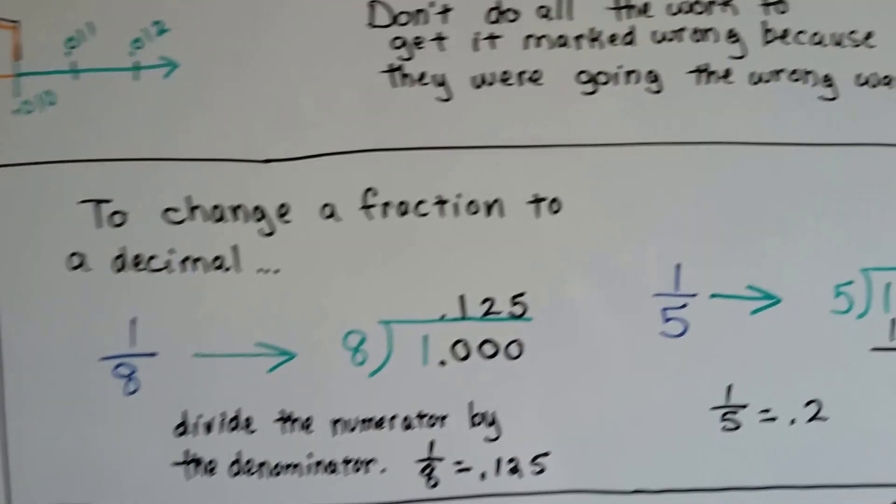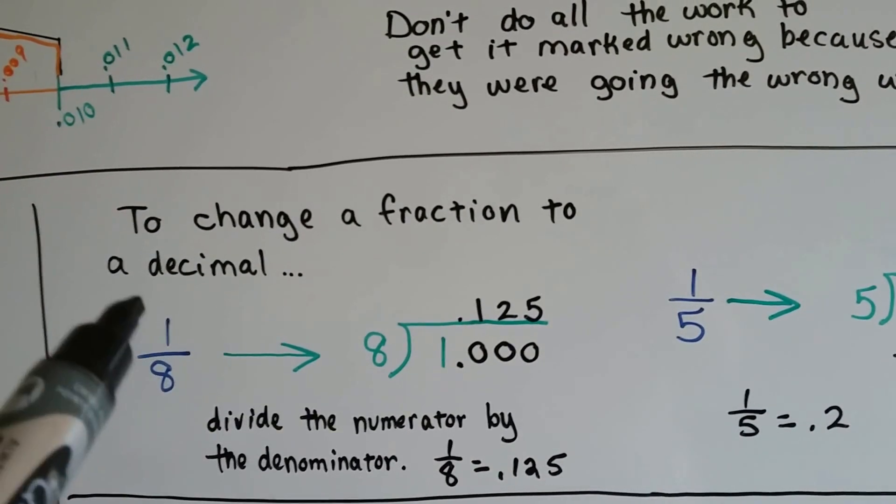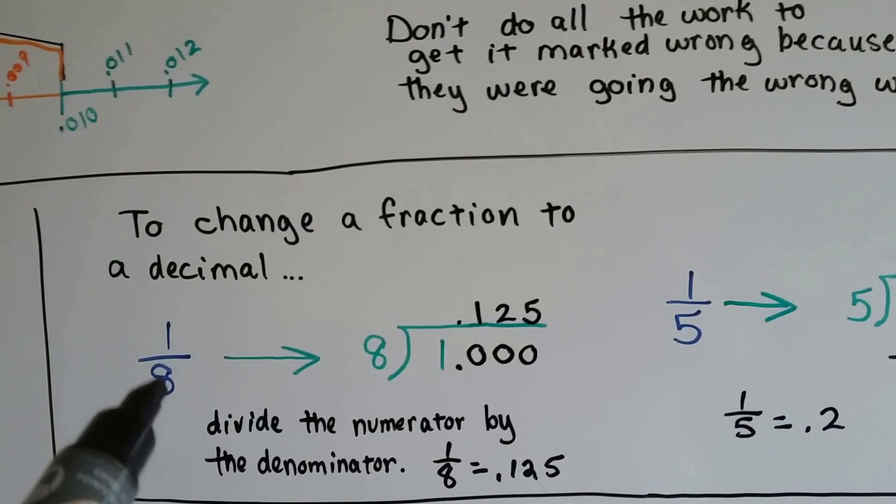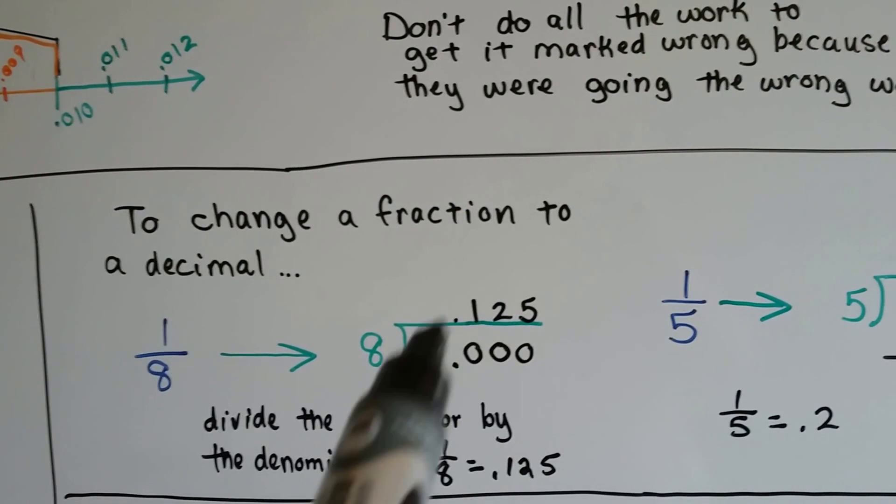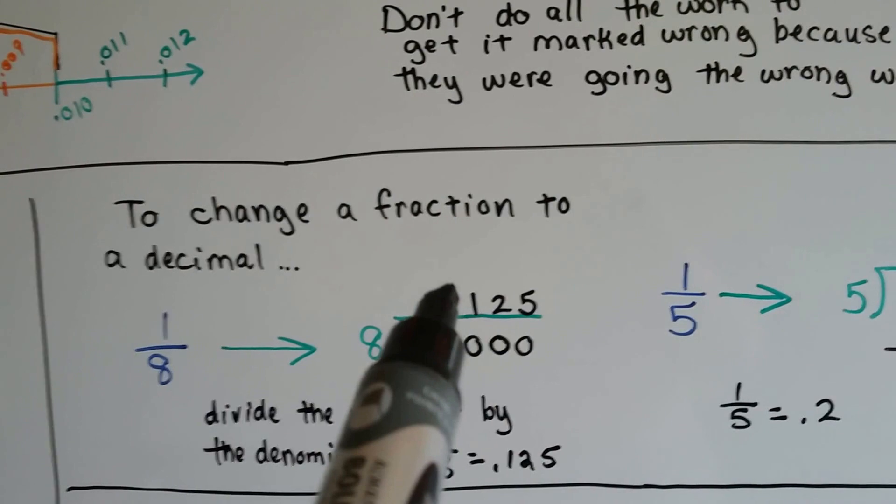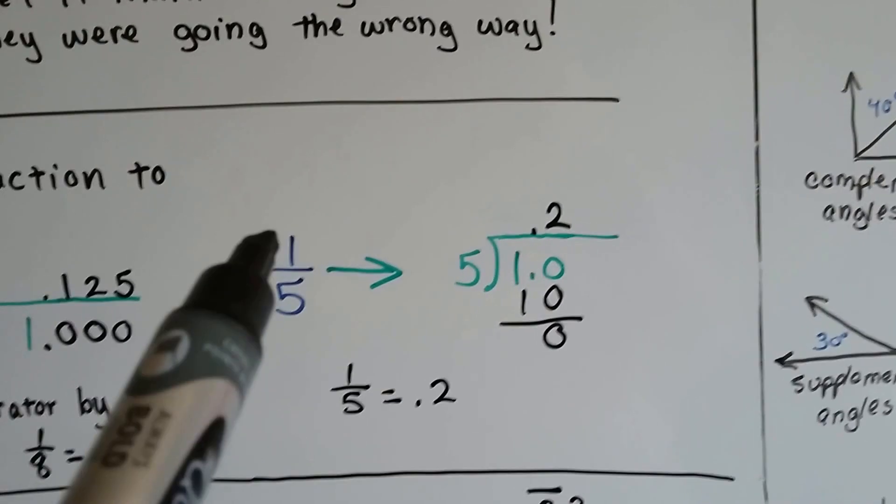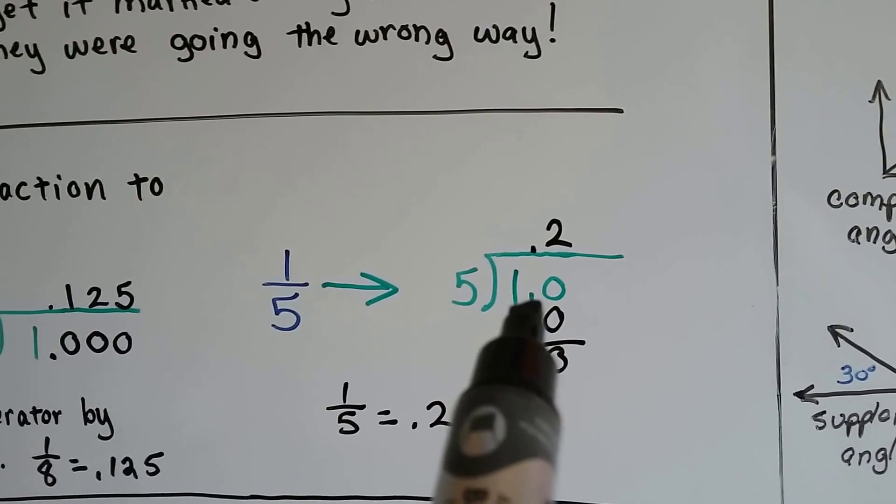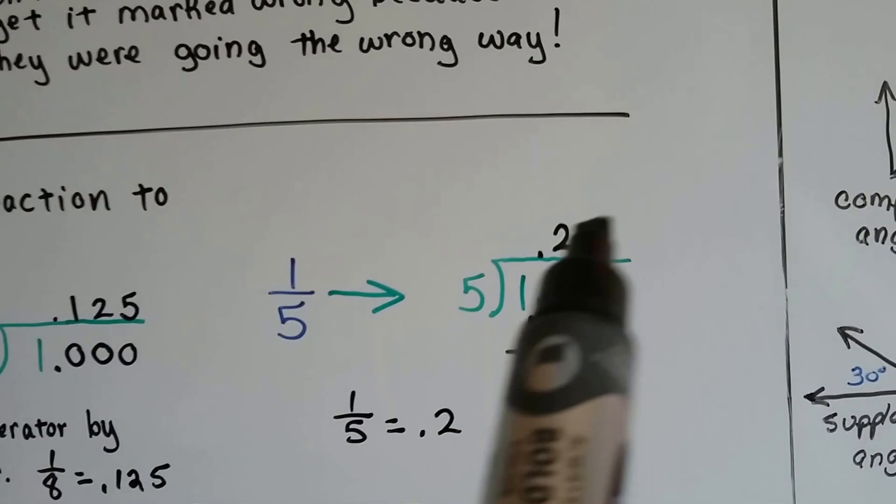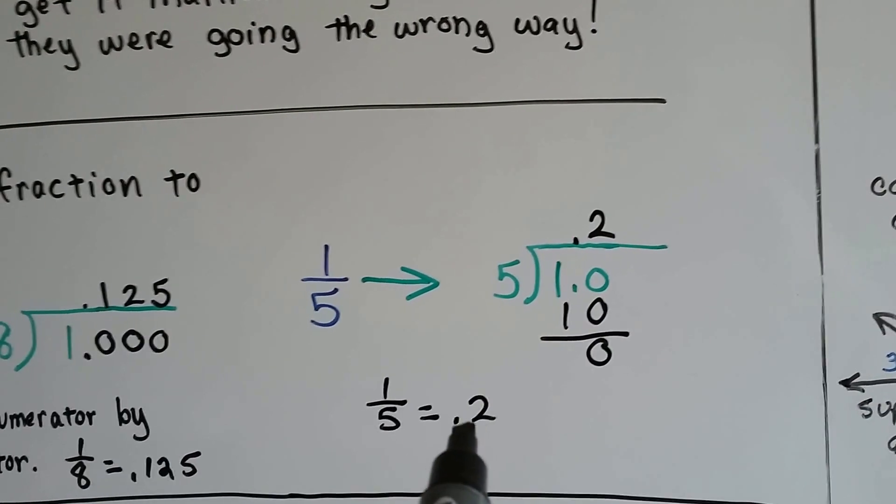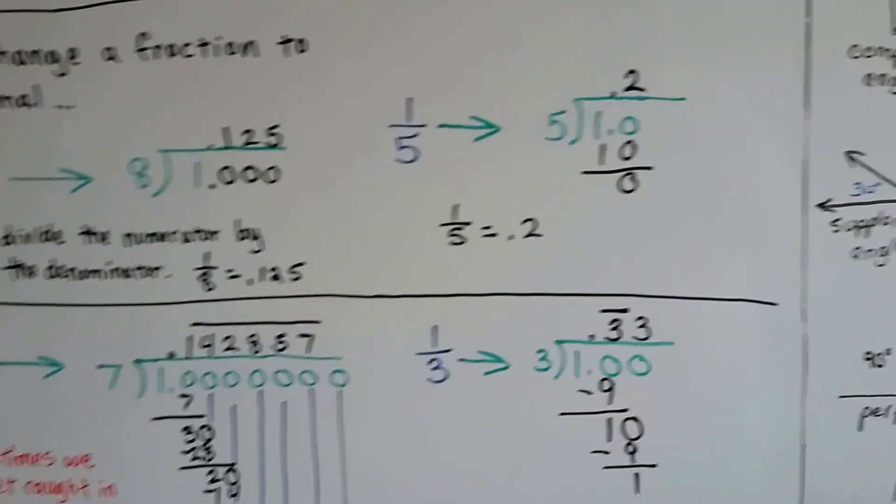So, to change a fraction to a decimal like we did with the eighth, you put the denominator as the divisor and the numerator as the dividend, and it'll look crazy that you're going to put this big, huge denominator into this tiny little numerator, but we just add a decimal point and zeros to do it, and we know that one-eighth is equal to .125. For one-fifth, we put the five into the one. All we had to do is add a decimal point and one zero, and five goes into ten two times, and we know that one-fifth is equal to .2. We can add a zero onto the back of that if we wanted to. We could say it's .20, because we can add as many zeros as we want on that side of the decimal point.